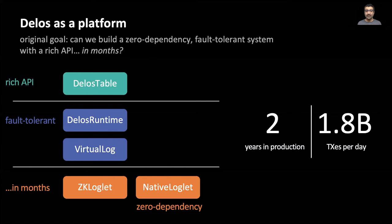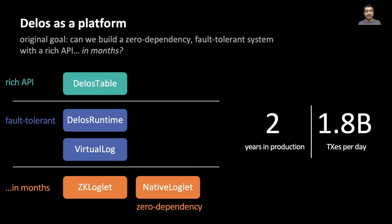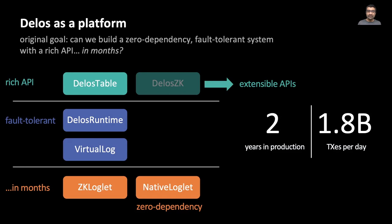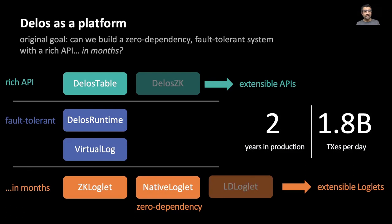Delos has now been in production for over two years and serves nearly 2 billion transactions per day. But beyond that, virtual consensus also enabled new capabilities. We can add new APIs in Delos very easily. For example, we're working on a prototype ZooKeeper API. We can also add new loglets to Delos easily. For instance, we have experimental log device-based loglet as well as the striped loglet. In essence, Delos acts as an extensible platform that enables rapid innovation. We can try out new APIs and new ordering mechanisms without rewriting the entire system from scratch.